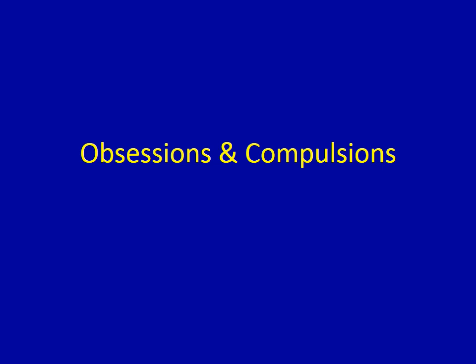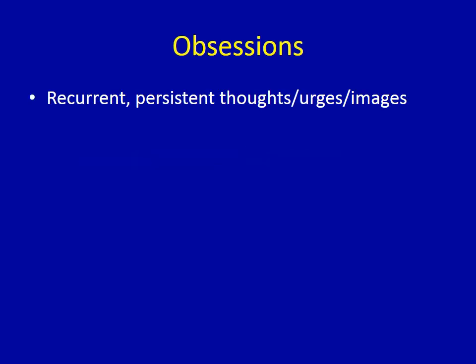The goal of this video lecture is to review the characteristics of obsessions and compulsions. Obsessions are recurrent and persistent thoughts, urges, or images — these are cognitions. These cognitions can be verbal, such as a worry that you've been contaminated with some kind of pathogen.